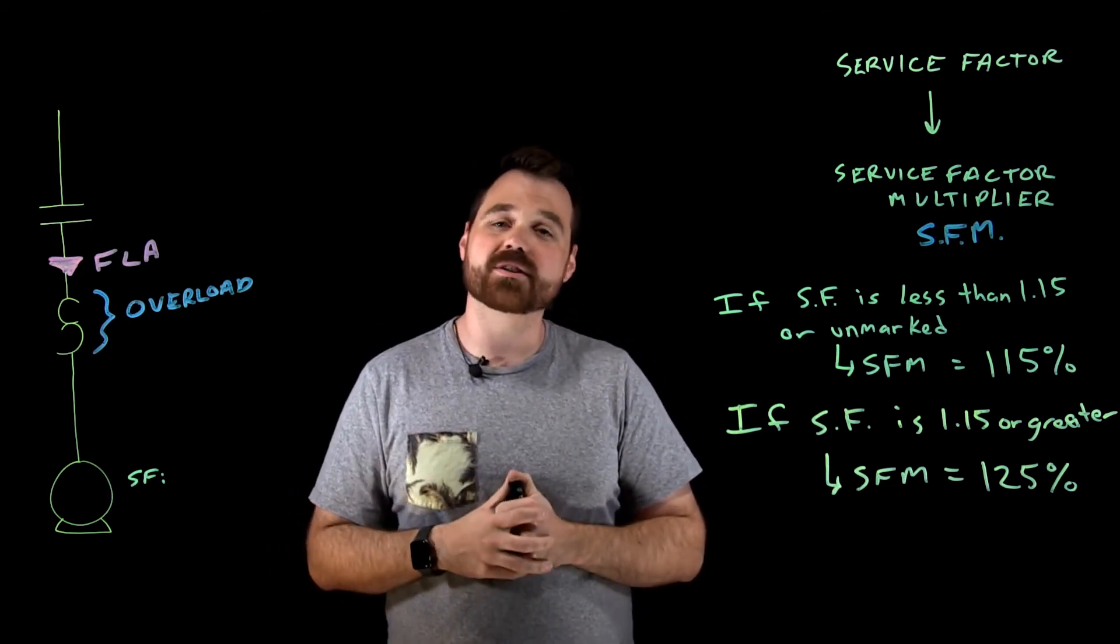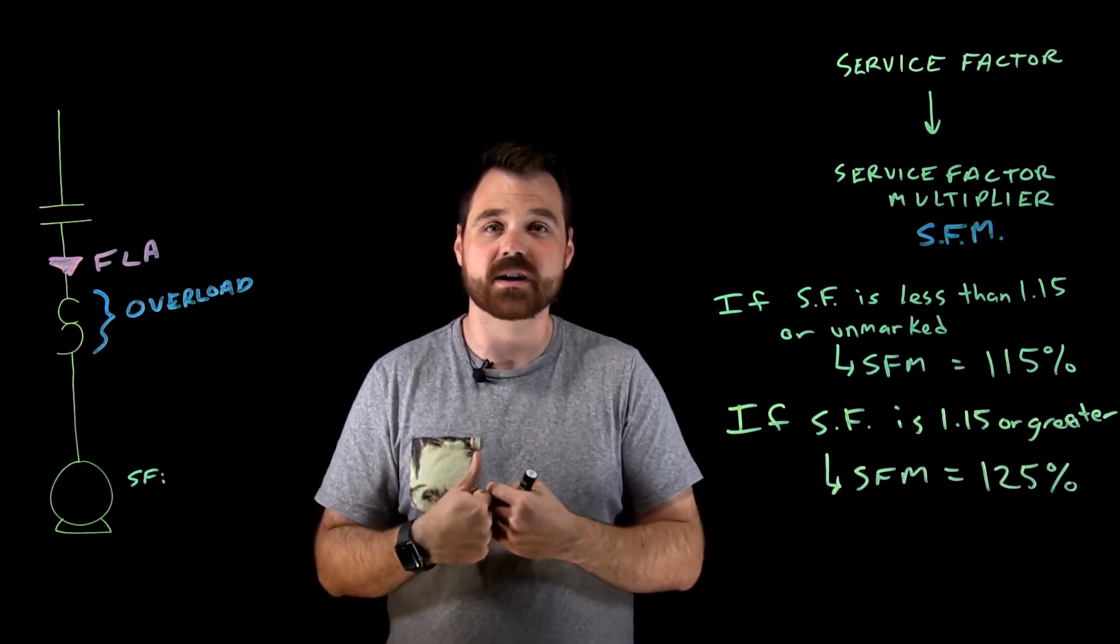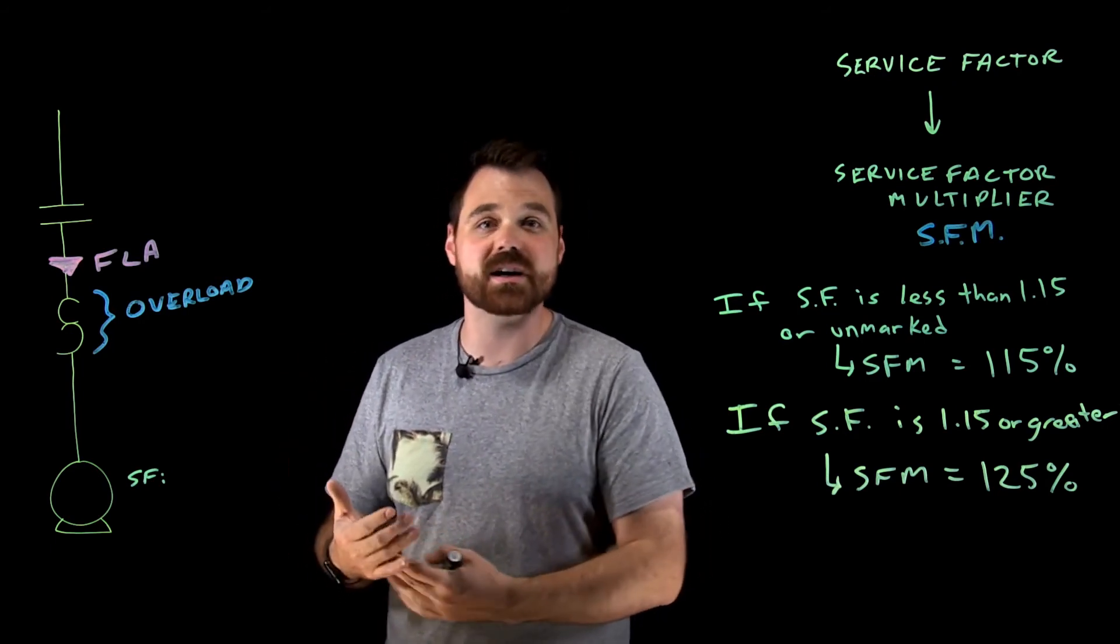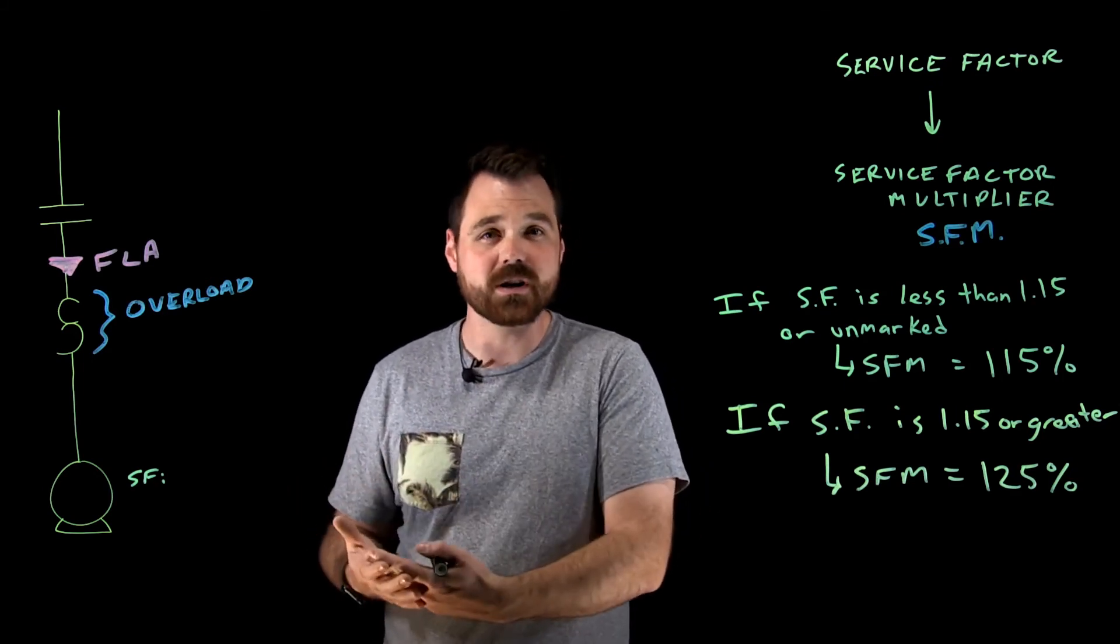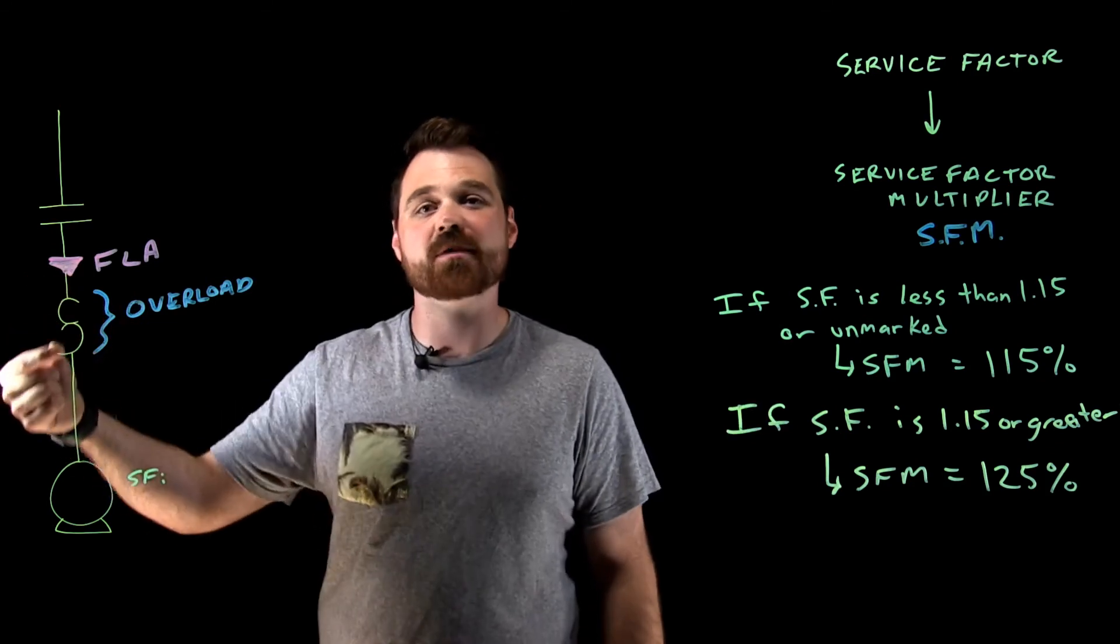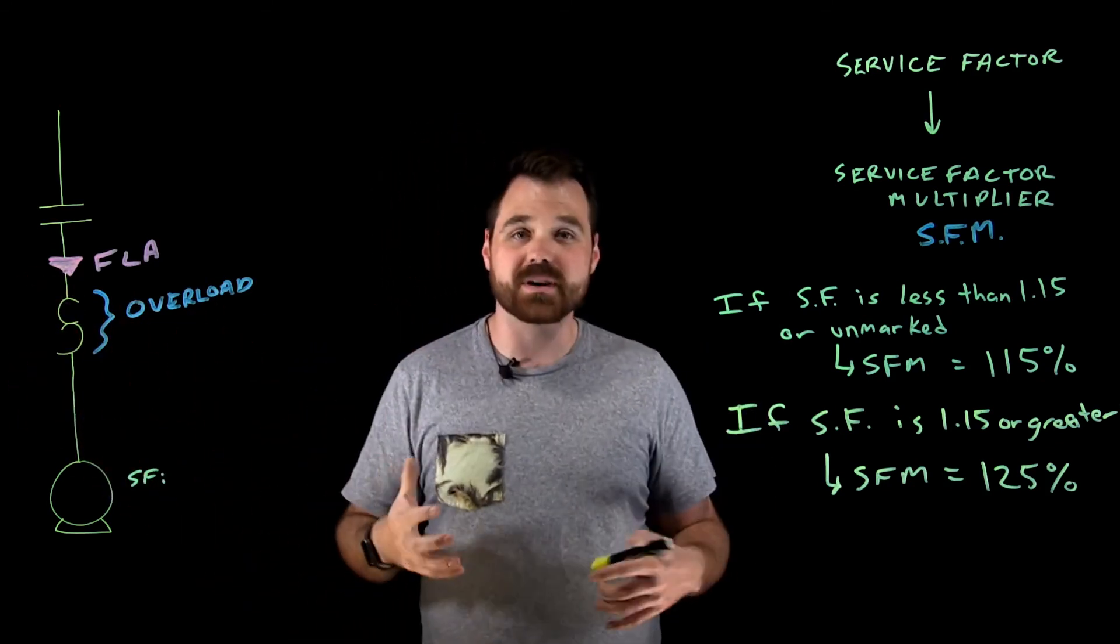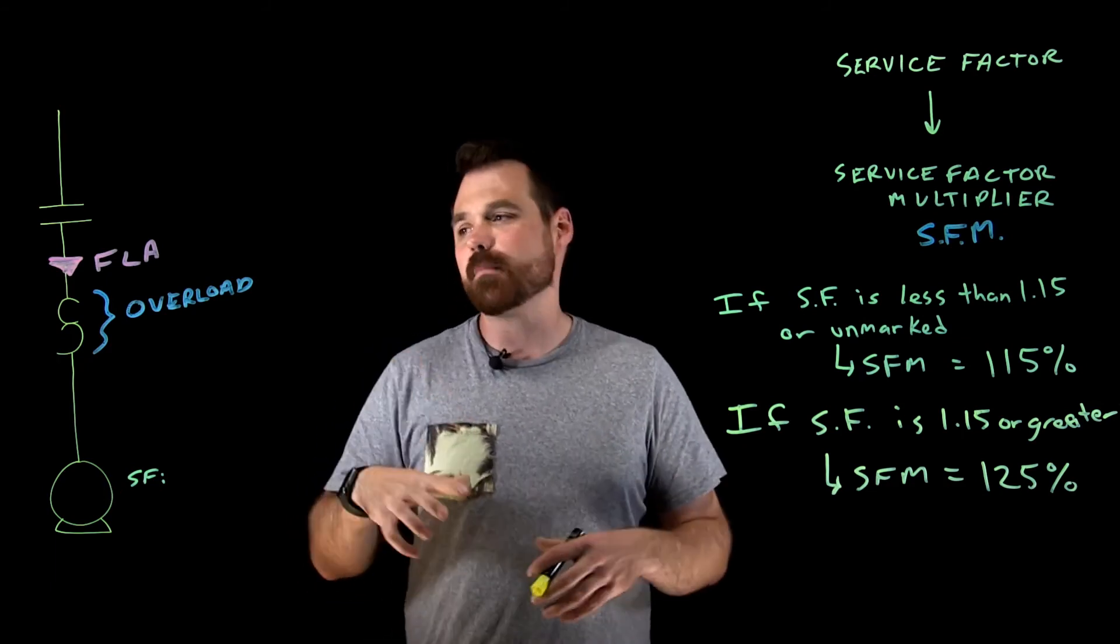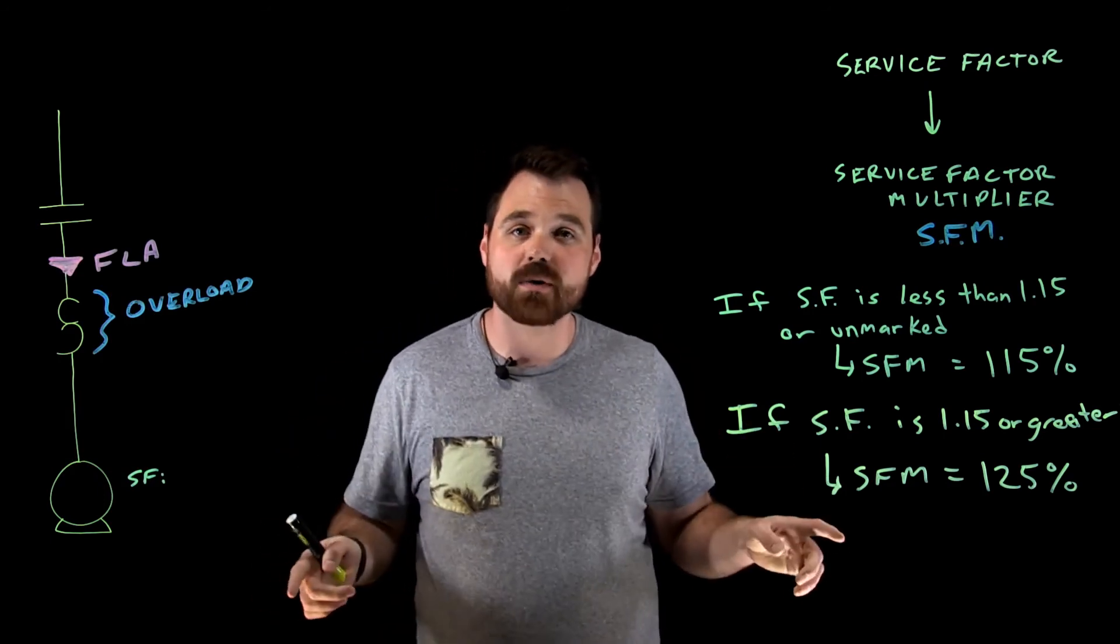Now, one really important thing to remember here is if you're using some type of reduced voltage starting, something like a Y Delta or an auto transformer or a part winding starter, your overloads need to be set on whatever current is actually going to be flowing through that overload device. So if you're doing some type of special motor starting, make sure you calculate what's going to be flowing through that device. I do have a couple videos on that you can check out.